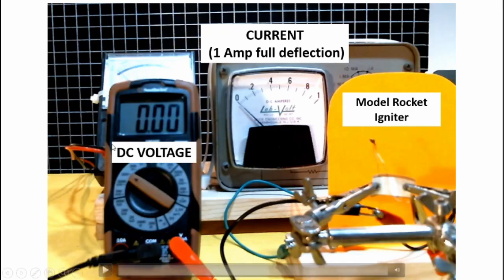Here's the test setup for our igniter test. What I have is a digital voltmeter here reading the voltage of the power supply, a current meter reading the amount of current passing through the igniter. Full-scale deflection is 1 amp, so we have 0.1, 0.2, 0.3, 0.4 amps and so on. And here's a model rocket igniter.